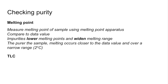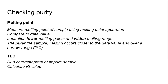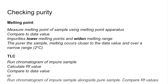If the melting range is wider than that, then it's more and more impure. For TLC, you'd run the chromatogram of your impure sample, measure the RF value, and compare that to a data value. Or you could run the chromatogram of your impure sample alongside the purer sample and compare the RF values directly from the TLC plate.